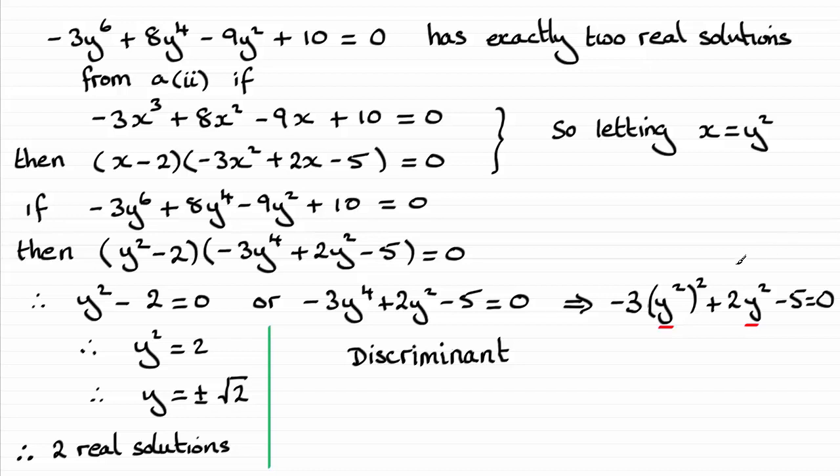So we have the a in the quadratic is minus 3, the b is the 2, and the c is the minus 5. So using b squared minus 4ac, what we get is the b squared minus 4ac there.